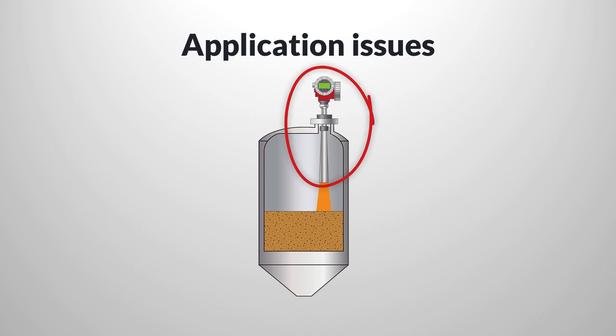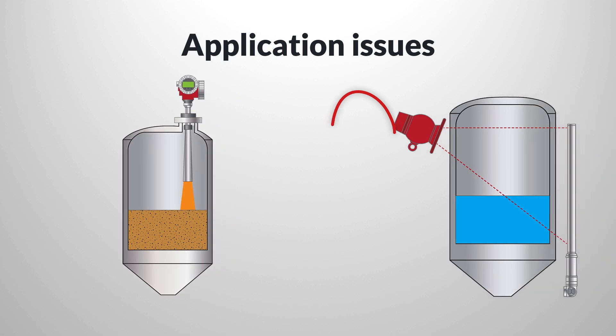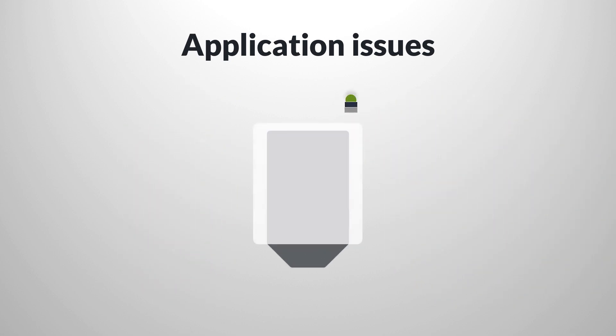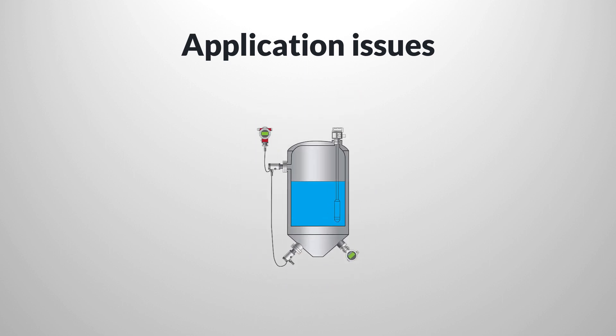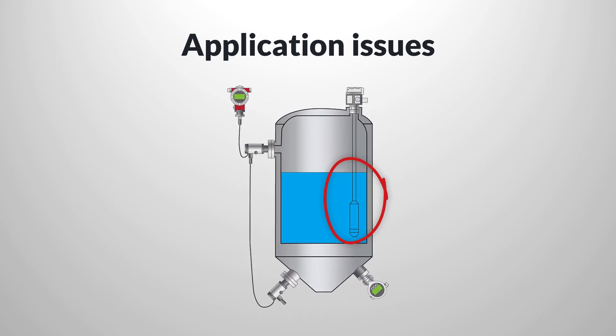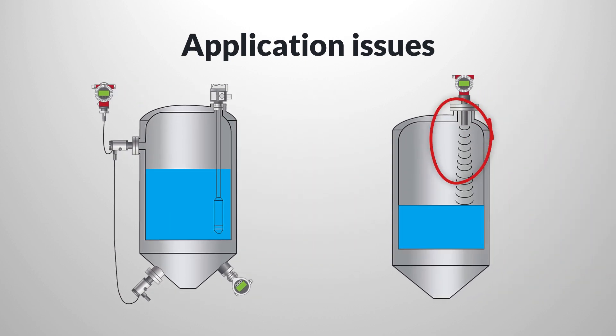There are other considerations that often guide engineers to suitable technology. Can the level sensor be inserted into the tank, or must it be completely external? Is a continuous measurement needed, or will a point switch be enough? Sometimes a continuous level reading isn't necessary, and a discrete level switch will do.